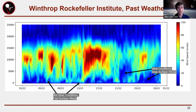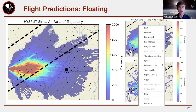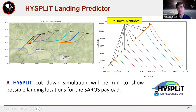We've done a lot of modeling and prediction to figure out our launch locations — this is actually from the Winthrop Rockefeller Institute in Morrilton, Arkansas, showing surface winds, which are an issue for us. We've also done float predictions and high-split predictions for landing location. You can see the difference that a different cut-down altitude makes for where you land this payload.